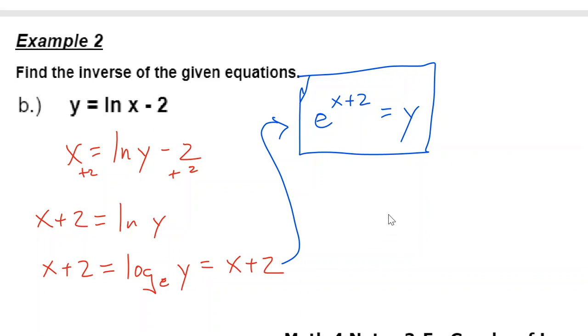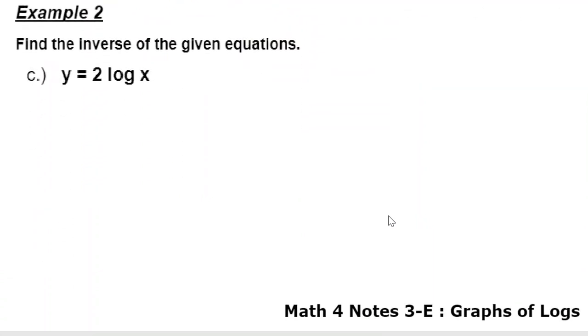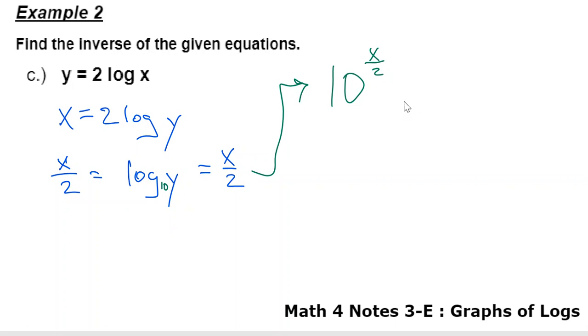We'll try that again. y equals 2 log x. So if I say x equals 2 log y, I don't think that bringing the 2 over here is going to help us get y by itself. So we're going to divide both sides by 2. Well, I guess we're about ready to rewrite this as an exponential. If I want to rewrite it as an exponential, I have to remember that that is log base 10. So it is 10 to the x over 2 equals y. Once again, nice and clean. y is by itself.